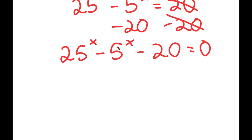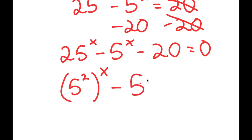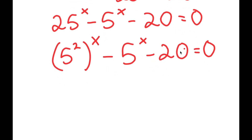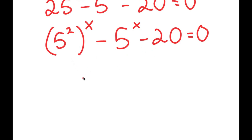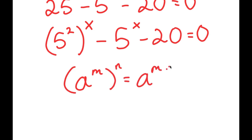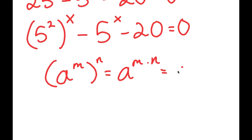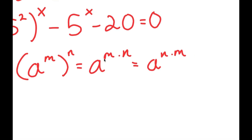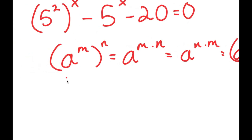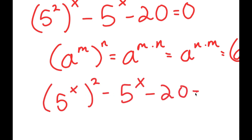Now 25 to the power of x, I can rewrite this as 5 squared to the power of x. If I have something in the form a to the power of m to the power of n, this is the same thing as a to the power of m times n. So 5 to the power of 2 to the power of x equals 5 to the power of x to the power of 2, giving us 5 to the power of x squared minus 5 to the power of x minus 20 equals zero.